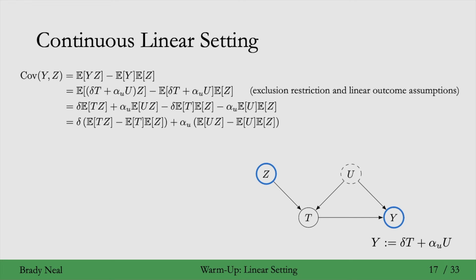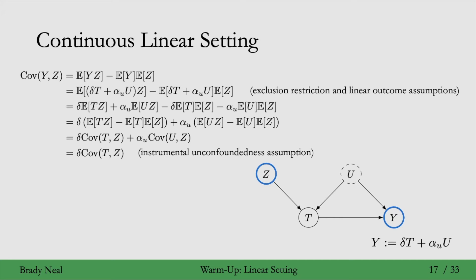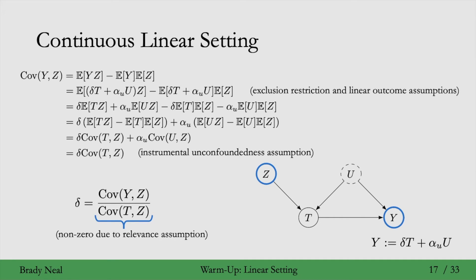We can rearrange terms to bring the delta terms together and the alpha terms together. This allows us to apply the same covariance identity twice to get the covariance of t and z and the covariance of u and z. Then u and z are independent by the instrumental unconfoundedness assumption, so that covariance is zero and we can remove that term. Finally we can solve for delta, where the denominator is non-zero due to the relevance assumption. So we've identified the causal effect of t on y in the continuous setting.